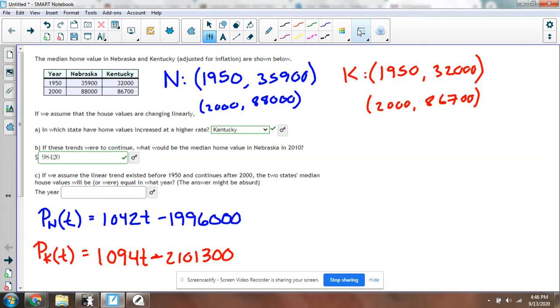That's what these values are - the median home value. You can replace P with median home value. I want to know when this value equals this value, so I'm going to set this equation equal to this equation and solve for t.